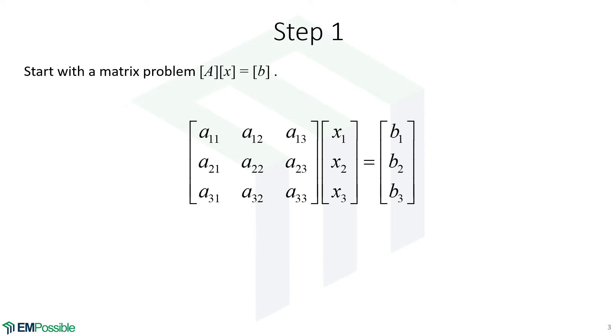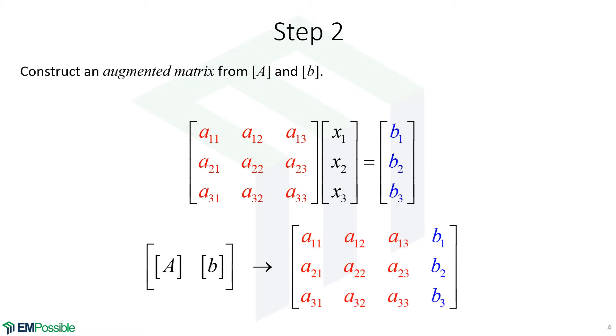Step one: here's our ordinary three by three matrix, and we would like to solve this using the Gauss-Jordan method. The first thing we're going to do is construct what's called an augmented matrix. We can think of this as a block matrix. We'll construct this augmented matrix, and on the left is our A matrix, and on the far right we've inserted this column vector, our B column vector. So we now have a sort of three by four augmented matrix. That's step one: form the augmented matrix.